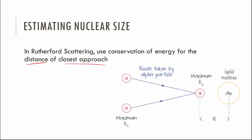You can get a rough, order-of-magnitude estimate with a very simple conservation of energy problem. The IB loves this: calculate the distance of closest approach. The idea is you're shooting alpha particles — they're positively charged and the nucleus is very positively charged, so it repels them. They come in with some kinetic energy, slow down, and stop at the closest distance, then turn around and fly back if they hit dead-on.